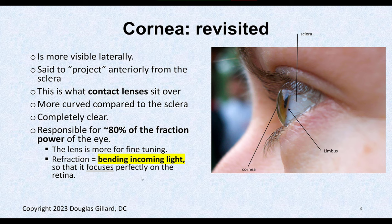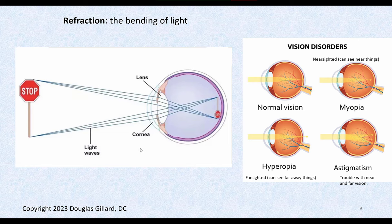Refraction is the bending of incoming light so that it focuses perfectly on the back part of the eye, called the retina. If you look at a stop sign, light reflected off it — in the form of photons — is captured through the cornea, bent, and hits the retina perfectly. The lens helps with fine tuning. The stop sign is actually upside down on the retina because the light beams crisscross.